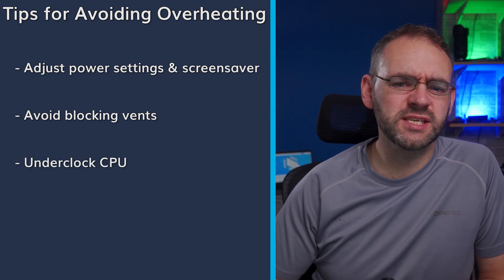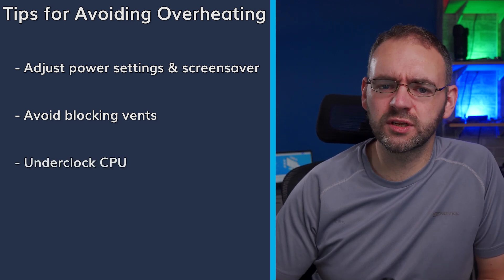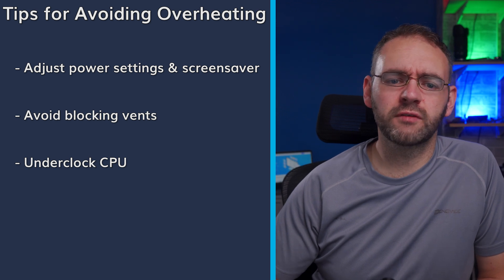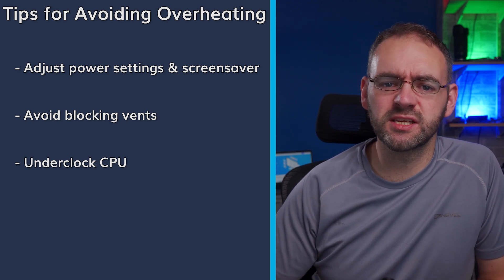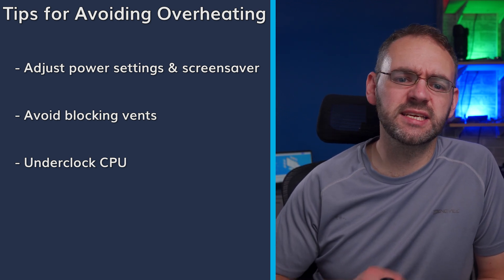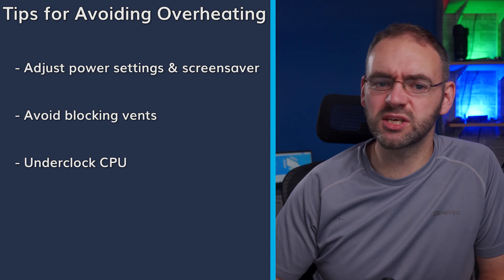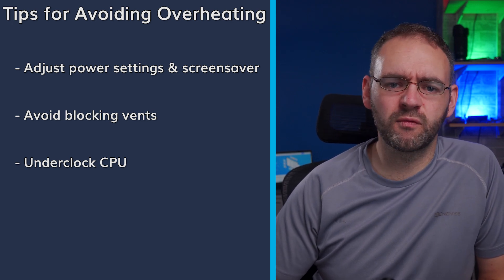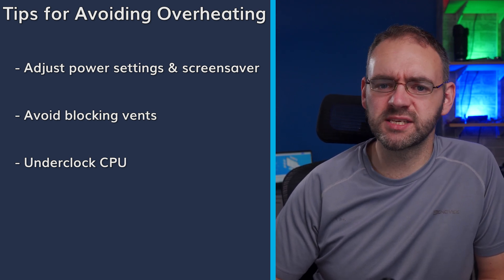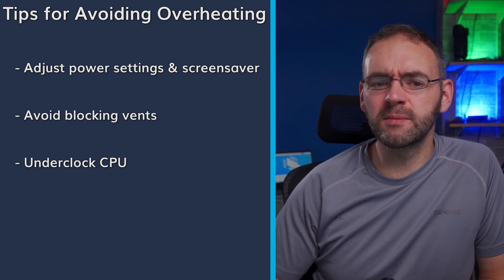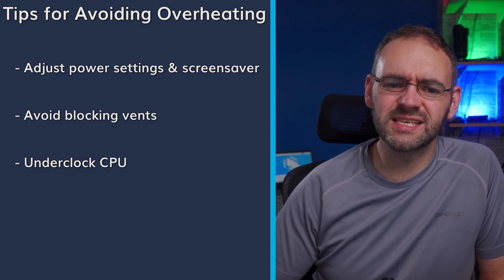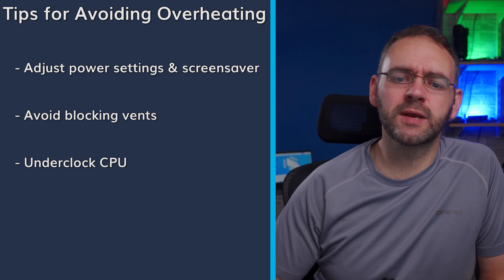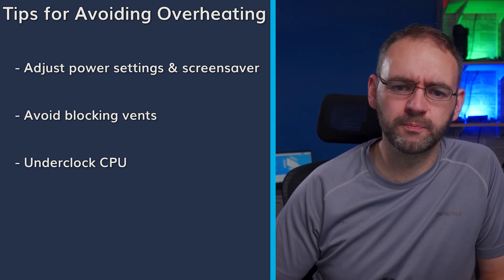If the computer's CPU tends to run hot, you could consider underclocking it. Underclocking involves reducing the CPU's operating frequency to decrease heat generation. This can be done through the computer's BIOS settings or through specialized software provided by the CPU manufacturer. Keep in mind that underclocking may result in slightly reduced performance, but it can help keep temperatures under control.